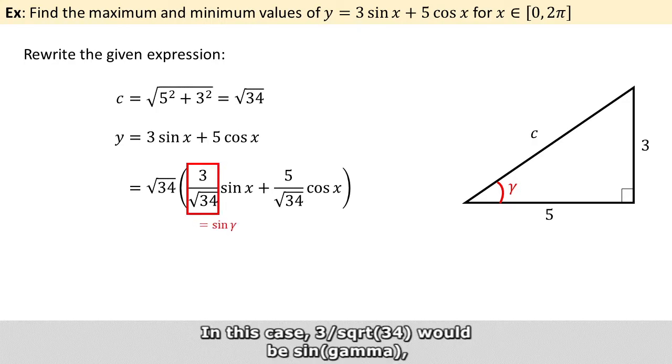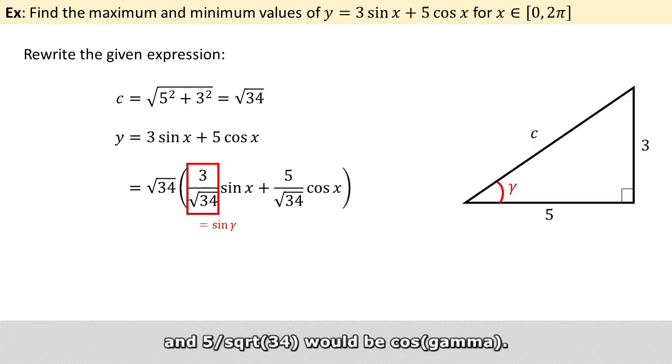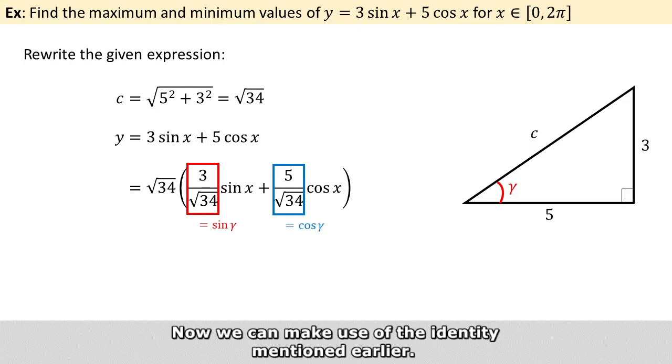In this case, 3 over square root of 34 will be sine of gamma, and 5 over square root of 34 will be the cosine of gamma. Now we can make use of the identity mentioned earlier.